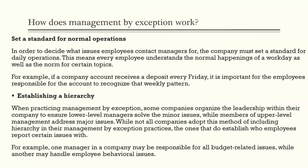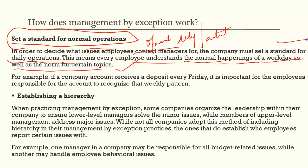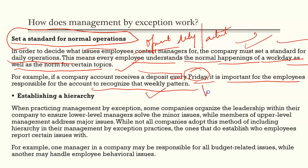Now, how does this work? First of all, there is a standard for normal operations. Whatever the normal daily operations are in your organization, you need to create a layout of those daily operations and define what are normal happenings on a daily basis. For example, if you have to make a deposit every Friday, then you track whether that is happening or not. If there is any deviation from the weekly pattern, that needs to be noted. This is the first stage.